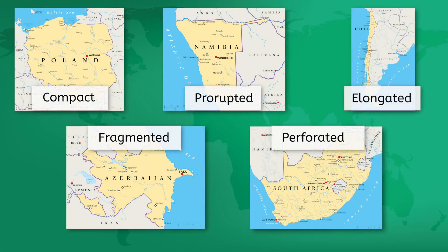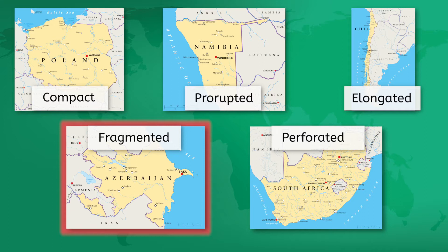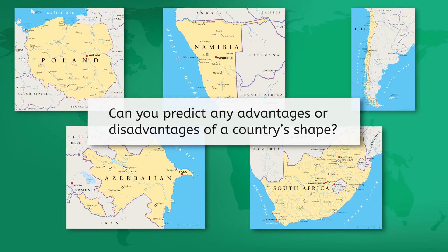Over time, most states' borders have formed into one or more of these shapes: compact, prorupted, elongated, fragmented, or perforated. Looking at these examples, can you predict any advantages or disadvantages of a country's shape?